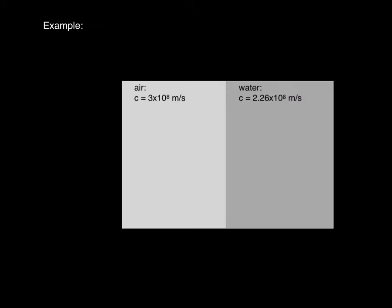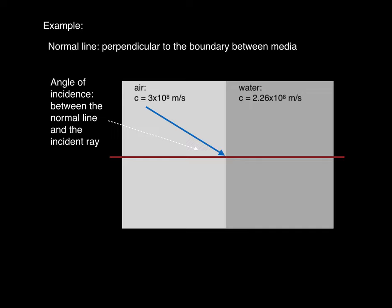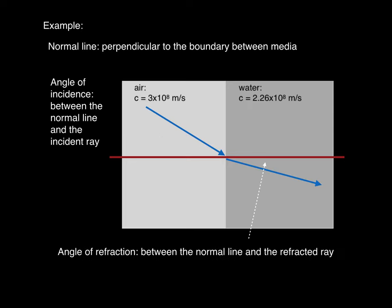When analyzing refraction, we draw a normal line, which is a line perpendicular to the boundary between the media. The angle of incidence is the angle between the normal line and the incident ray. The angle of refraction is the angle between the refracted ray and the normal line.